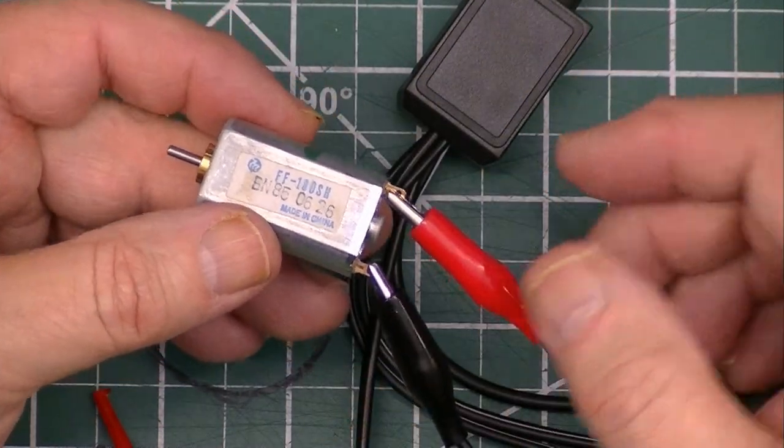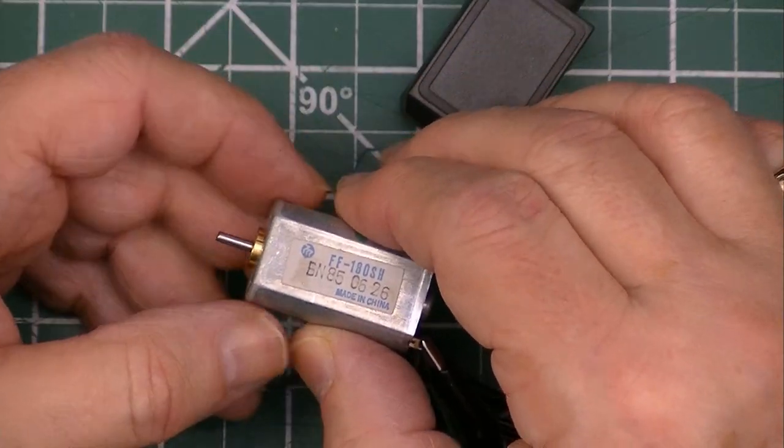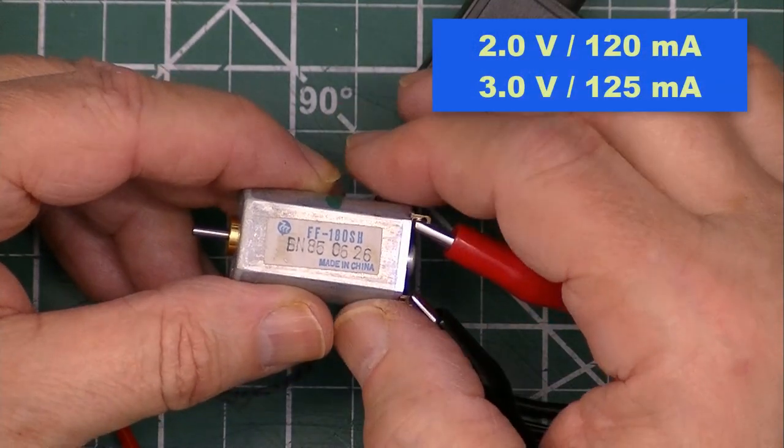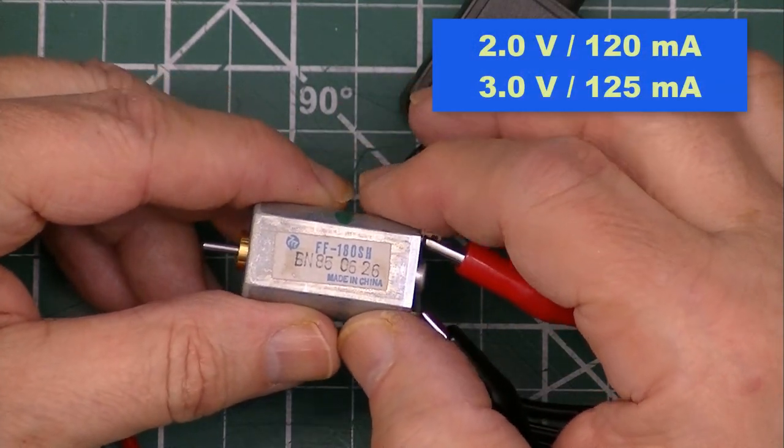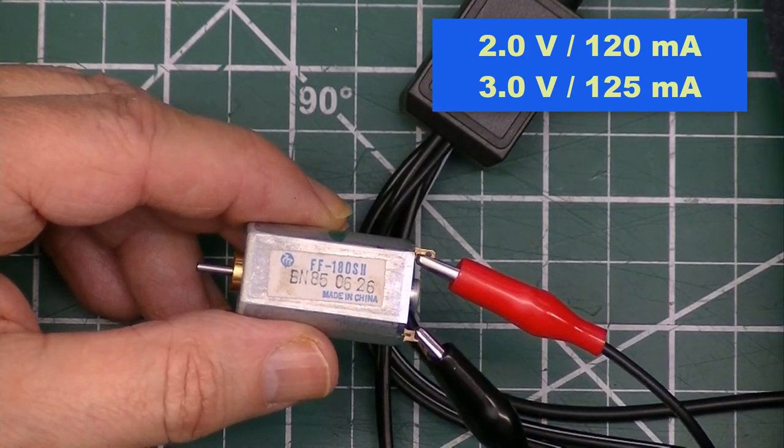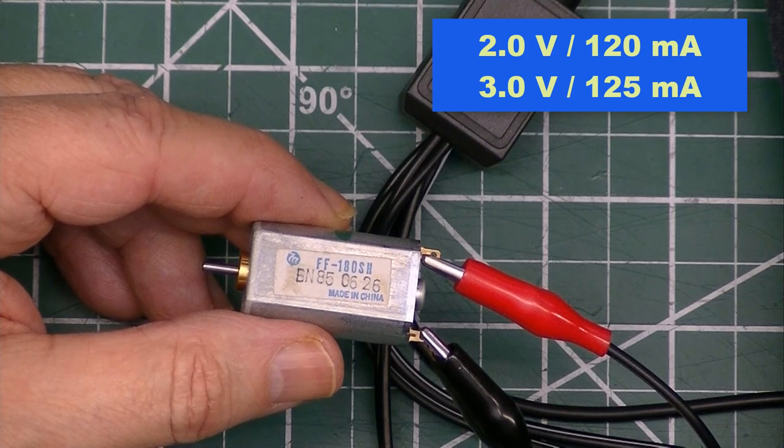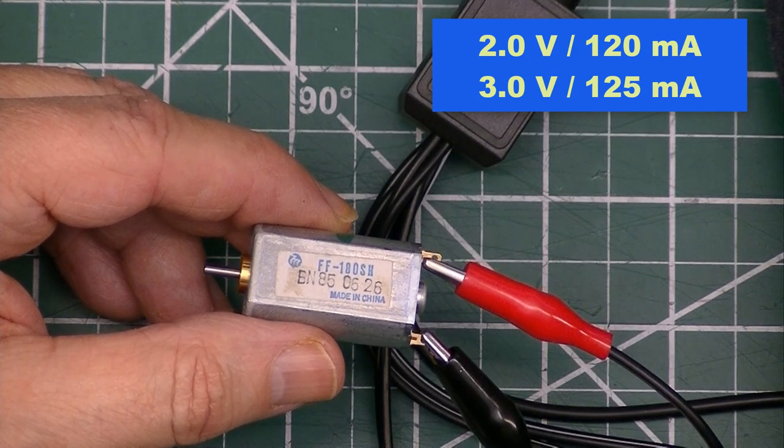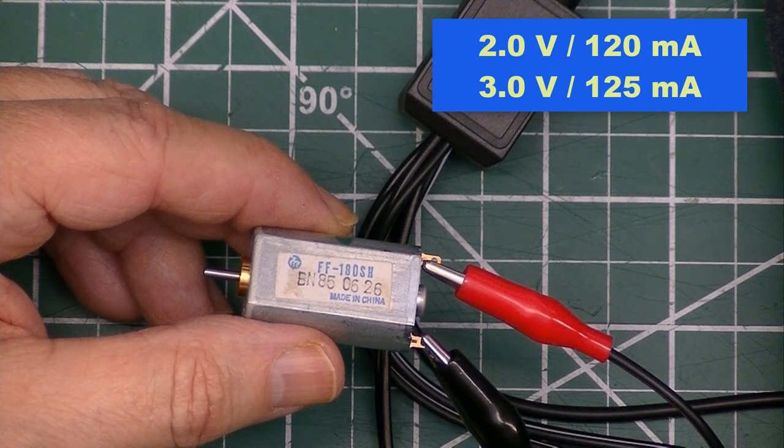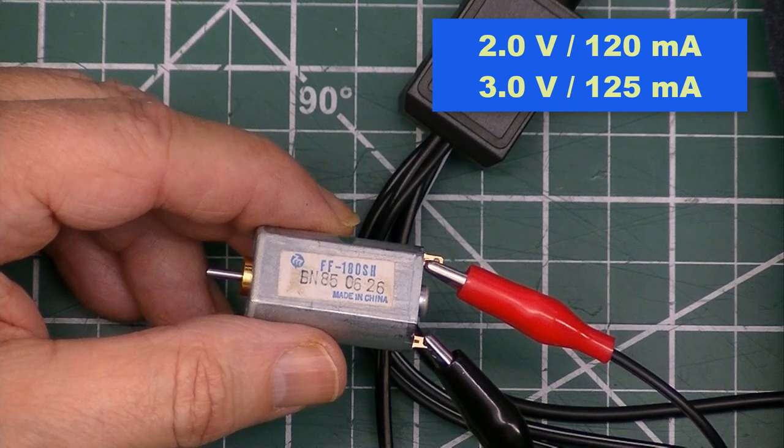This is the Mabuchi 180-SH motor. I'm running it at almost 2 volts and it's drawing 118, 120 milliamps. It says max is 3 volts, so at 2.5 volts still drawing 125 milliamps.